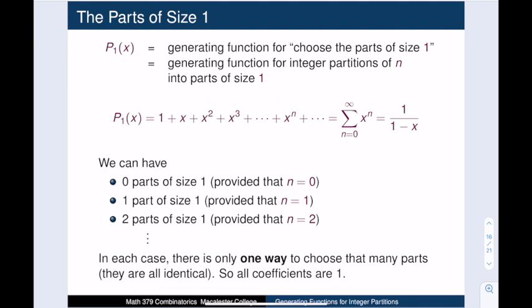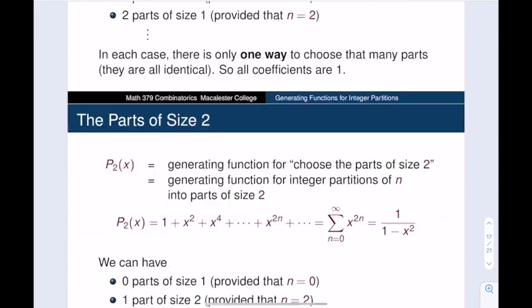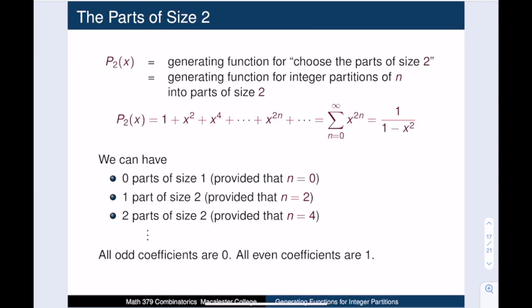Let's focus on the first question: how many parts of size 1 are there? The generating function for integer partitions into parts of size 1 is 1 + x + x² + x³ + ... = 1/(1 − x), since there is exactly one way to partition any number into a sum of 1's. For parts of size 2, there is one way to partition any even number into 2's and zero ways for odd numbers, giving 1 + x² + x⁴ + x⁶ + ... = 1/(1 − x²).